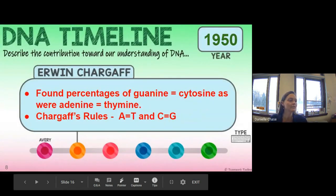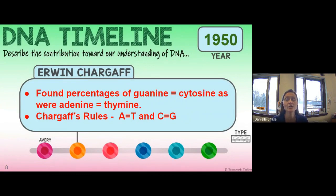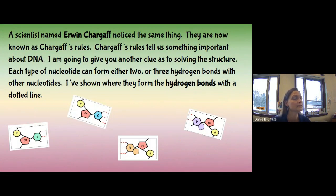In 1950, Erwin Chargaff figured out that the percentage of guanine equals cytosine and adenine equals thymine in any DNA sample he examined. A was always equal to T, and C was always equal to G. These are now called Chargaff's Rules, and they tell us something important about DNA structure.